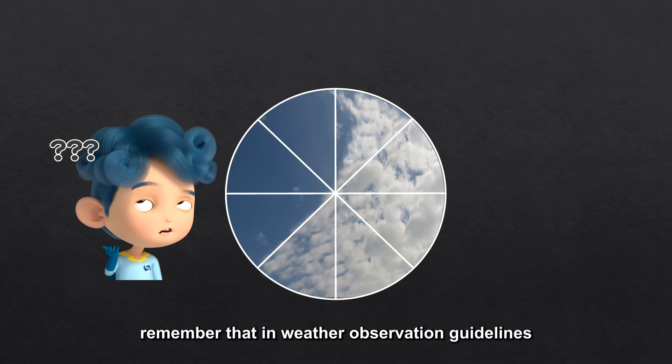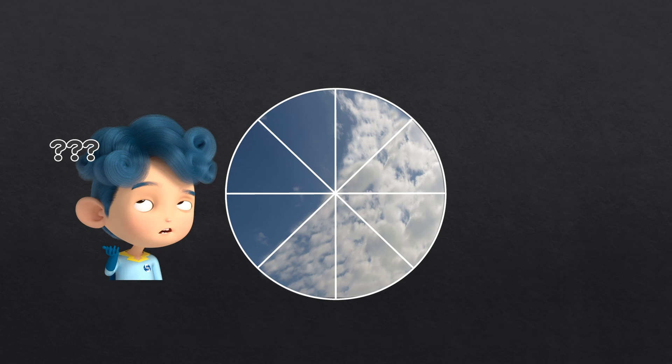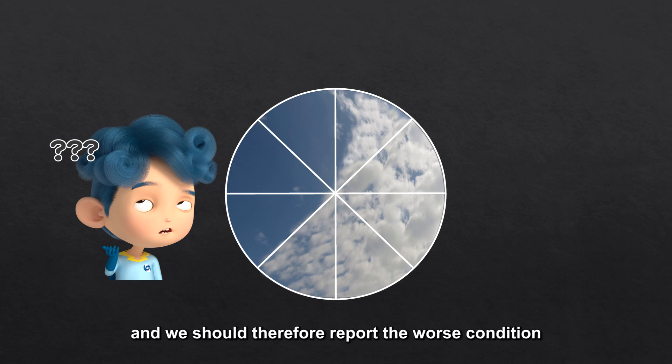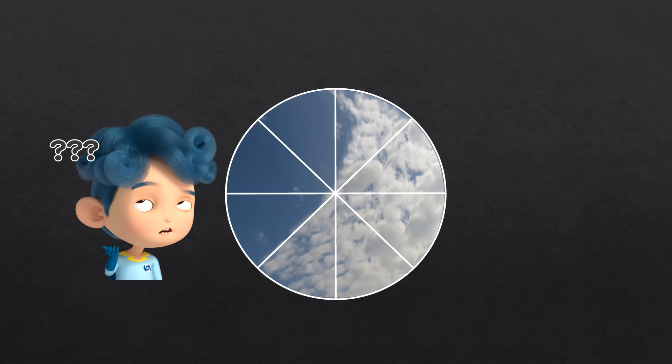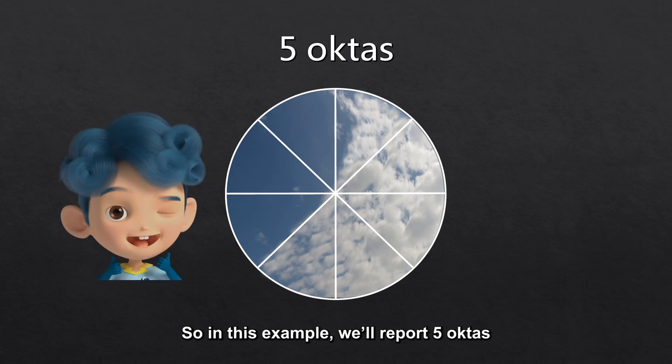As an observer, remember that in weather observation guidelines, more clouds are considered as a worse condition, and we should therefore report the worst condition. So in this example, we'll report five octas.